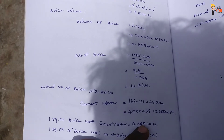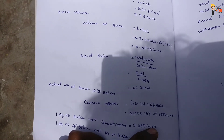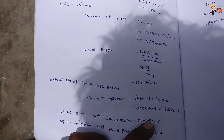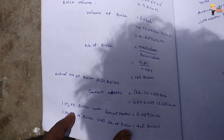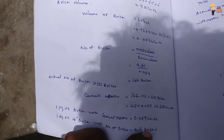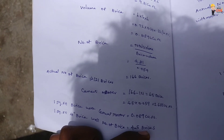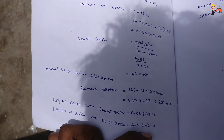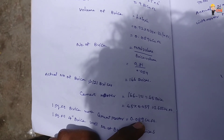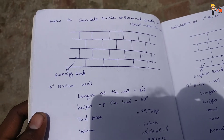The number of bricks per square foot is 4.5 bricks. We will use 4.5 bricks per square foot as the standard rate. The basic rate is 0.5 brick.